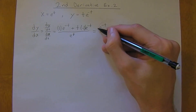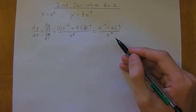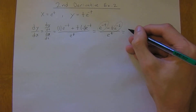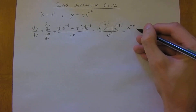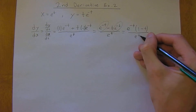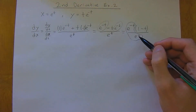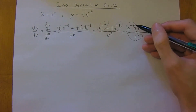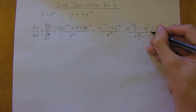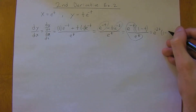Now you notice that we have e to the negative t appearing in both terms. More often than not, if you have the same factor, you want to factor it out. So we'll bring that out front: e to the negative t times (1 minus t), divided by e to the t. Combining the exponents, e to the negative t divided by e to the t gives e to the negative 2t, so we get e to the negative 2t times (1 minus t).